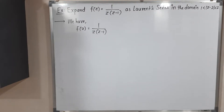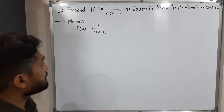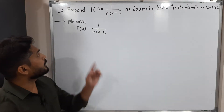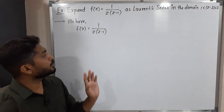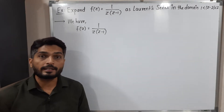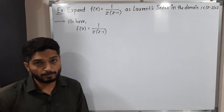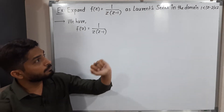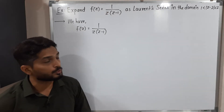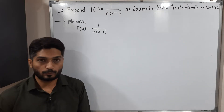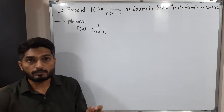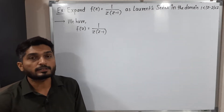In this video we are going to discuss this example. We have the function 1/(z(1-z)) and we are going to find its Laurent expansion for the given domain 1 < |z-2| < 2.